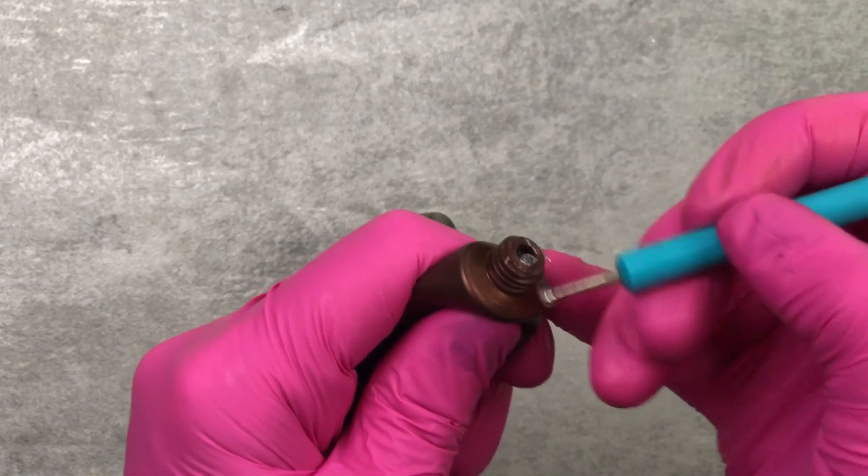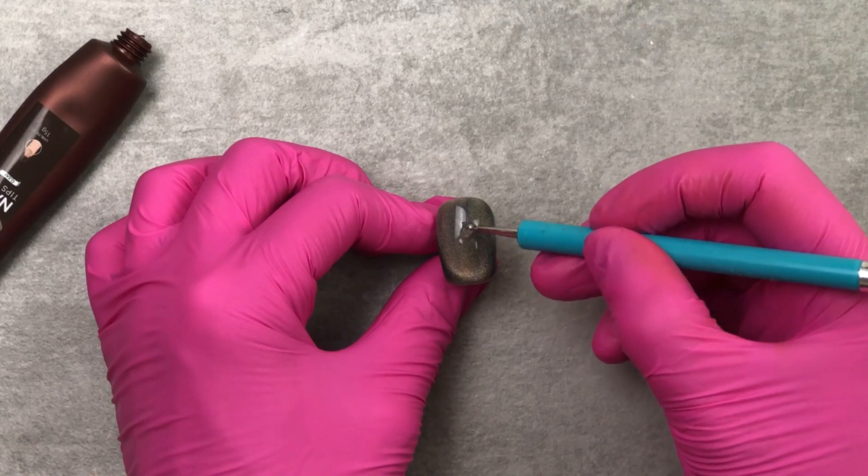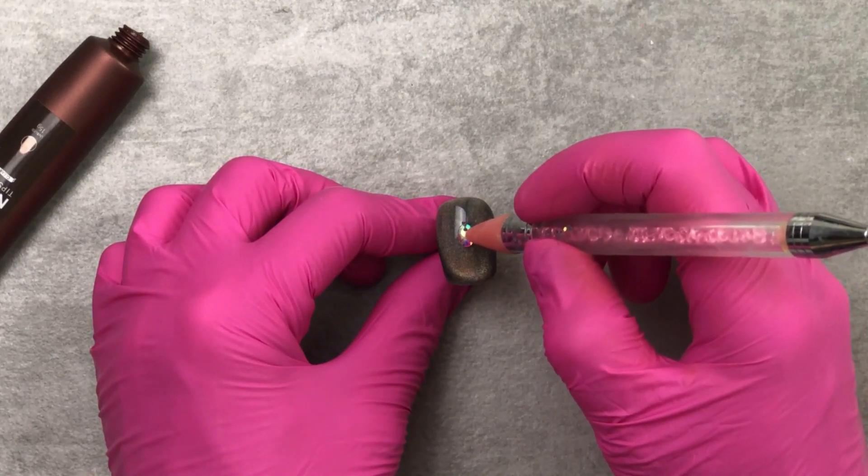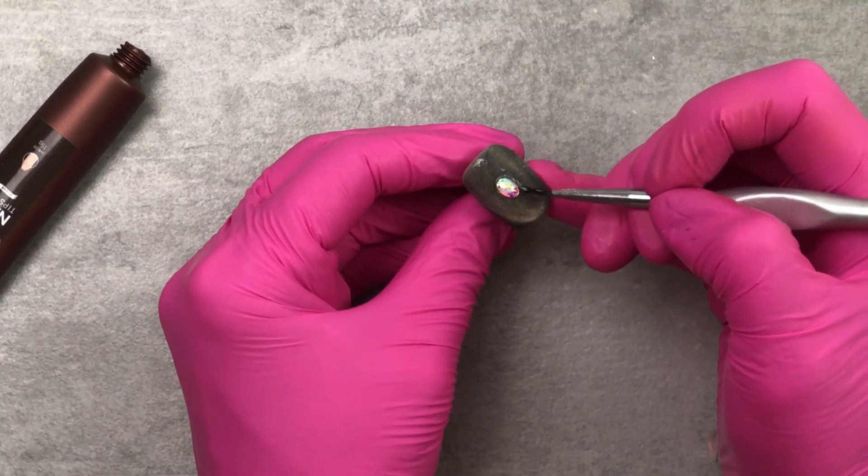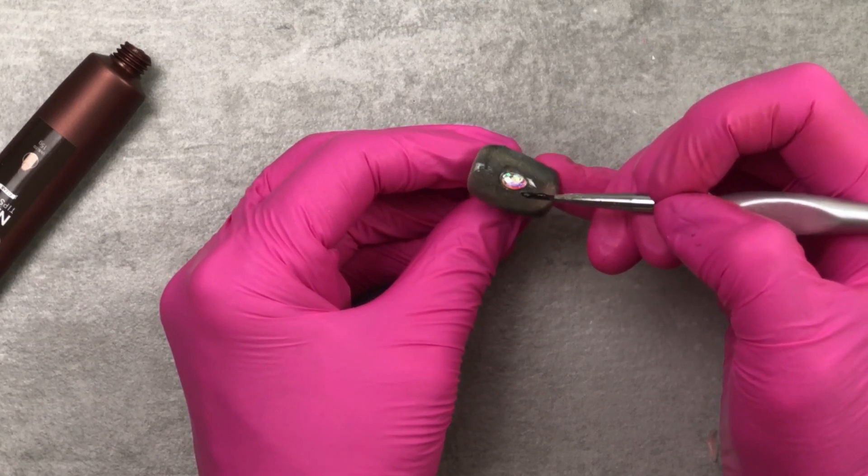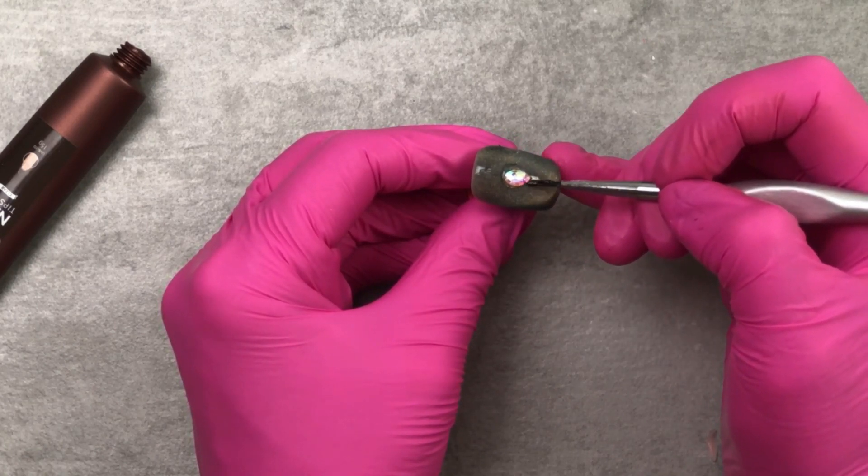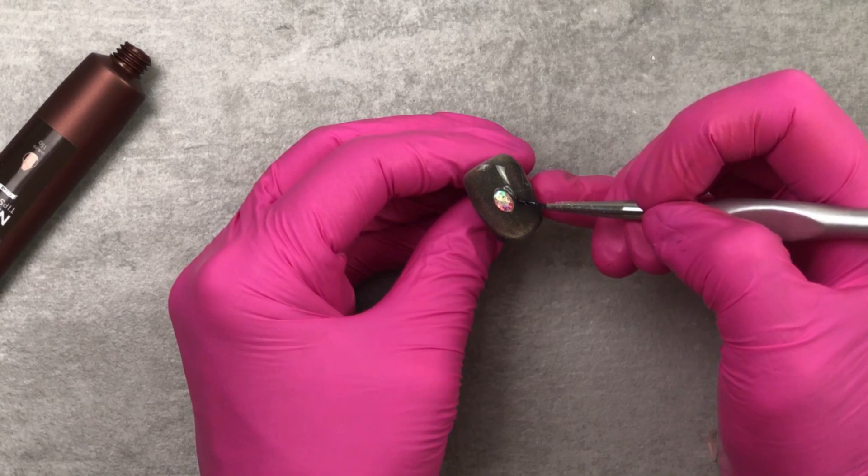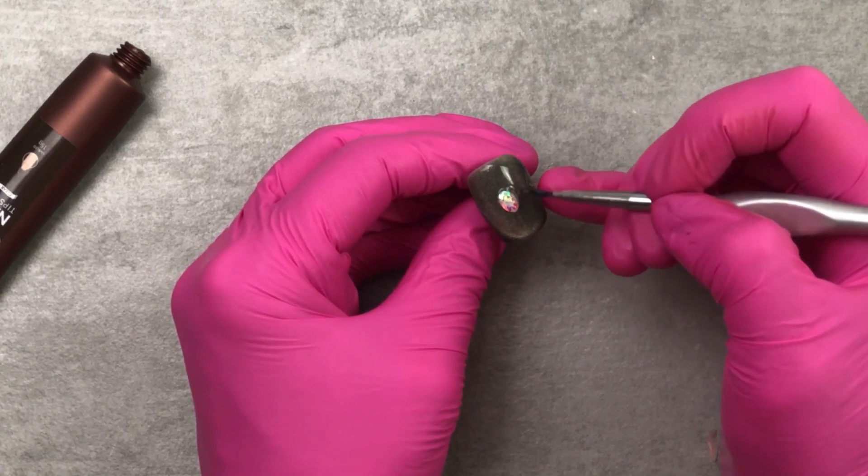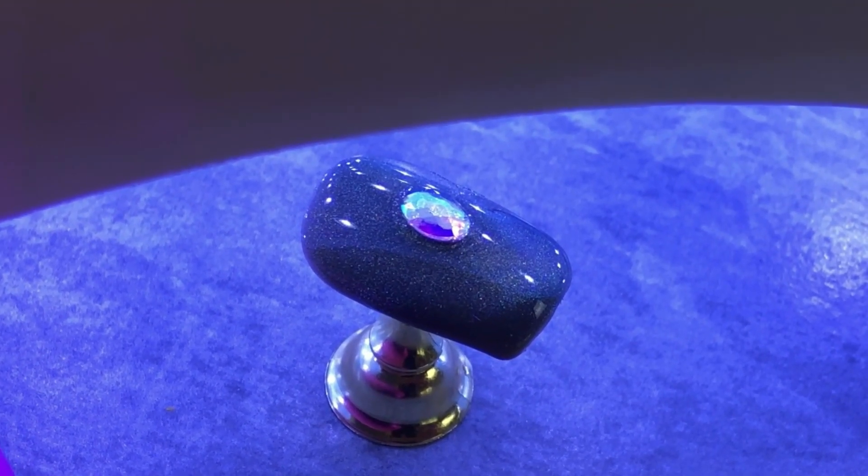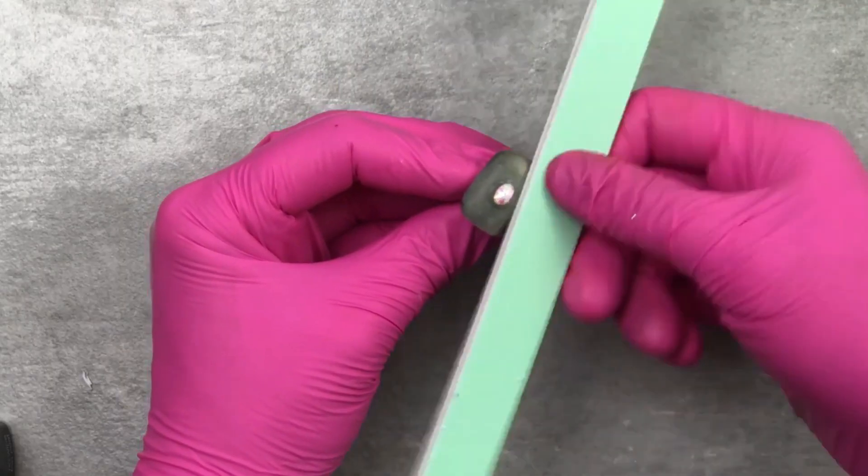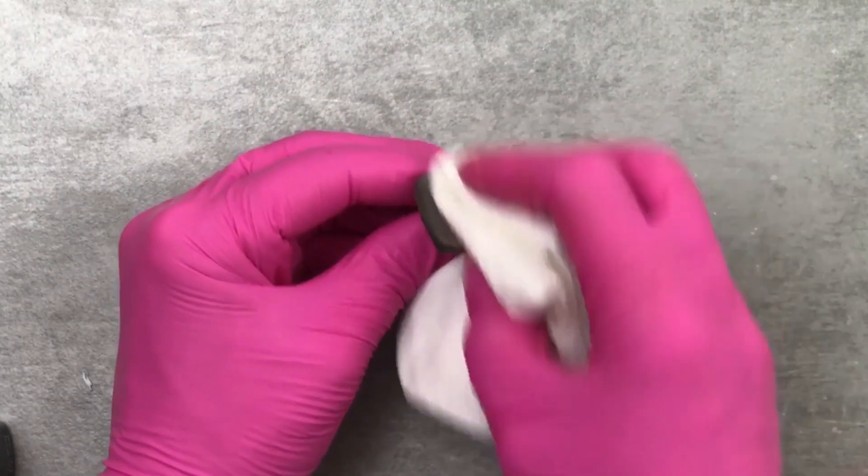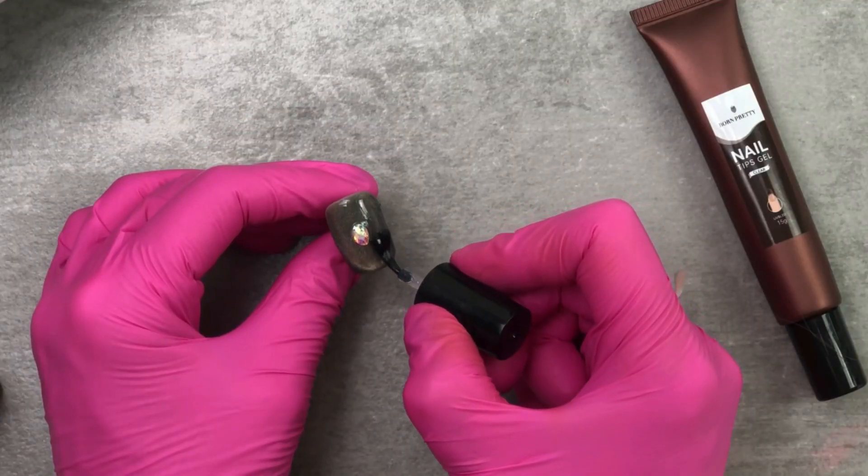If you have any extra that came out the bottom, you can use your e-file to smooth it out. And then another way you can use this nail tips gel is for rhinestone glue. Take a small amount and then place the rhinestone. And then kind of feather out the gel so that you don't have any really hard edges. Then cure. If you found that you used too much, you can just file it down to make it smooth. Then finish with a top coat.